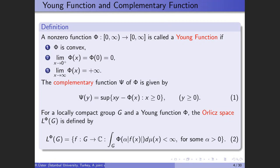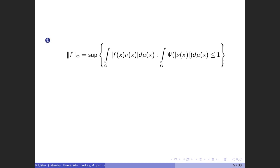For our research we will suppose that both phi and psi are continuous and strictly increasing. Now we can define our space. Let G be a locally compact group and phi be a Young function. Then the Orlicz space L^phi(G) is defined by equality two, where mu is the left Haar measure on the locally compact group G, and f indicates the mu-equivalence classes of measurable functions. There are two equivalent norms on Orlicz space: the first one is the Orlicz norm, where phi and psi are complementary functions.